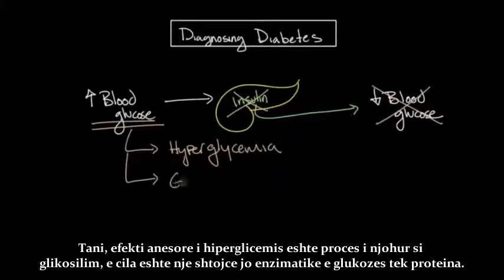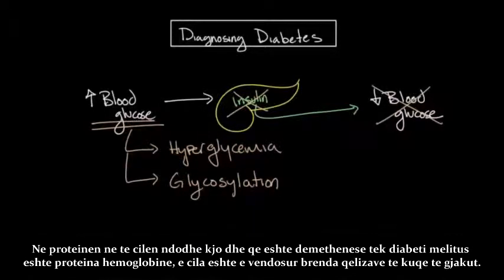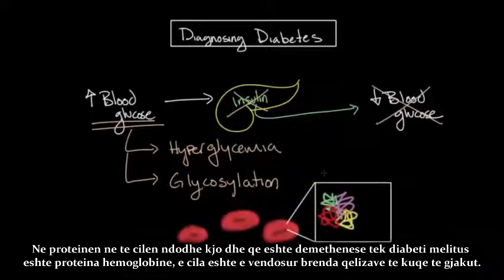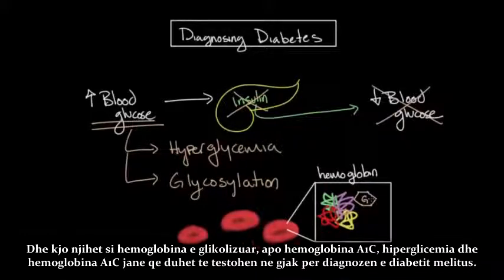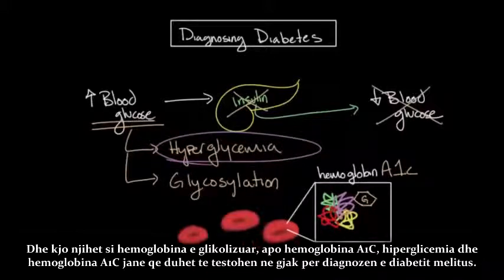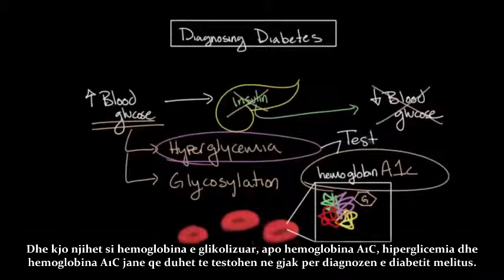A side effect of hyperglycemia is glycosylation — the non-enzymatic attachment of glucose to proteins. One protein of importance is hemoglobin, located within red blood cells. In the presence of hyperglycemia, glucose attaches itself to an abnormally high percentage of hemoglobin, and this is known as glycosylated hemoglobin, or hemoglobin A1c. It is the hyperglycemia and the hemoglobin A1c that are tested for in the blood to aid in the diagnosis of diabetes mellitus.